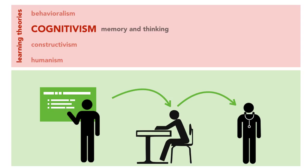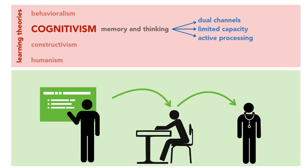Our three main concepts that we're going to focus on are: dual channels — people have separate information processing channels for visual materials and for verbal materials; limited capacity — people can pay attention only to a few pieces of information in each channel at a time; and active processing — people understand presented material when they pay attention to it, organize it into a mental model, and integrate it with other stuff they already know.